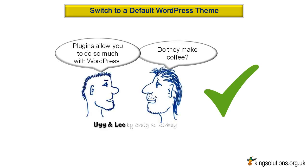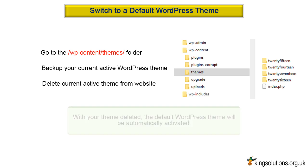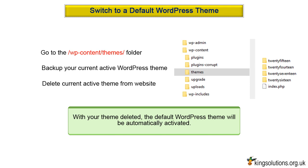Step 2: Switch to a default WordPress theme. If deactivating plugins didn't resolve the issue, the next step is to switch to a default WordPress theme, which will deactivate your current active theme. Connect to your WordPress site using an FTP client or cPanel file manager. Once connected, go to the WP content themes folder and check that you have one of the default WordPress themes installed — any of the default themes from 2010 to 2018 will do. If you don't have one, upload a default theme before continuing. Download your current active theme to your computer as a backup, then delete it from your website. With your theme deleted, the default WordPress theme will be automatically activated. Check your website to make sure the 503 service unavailable error is resolved.